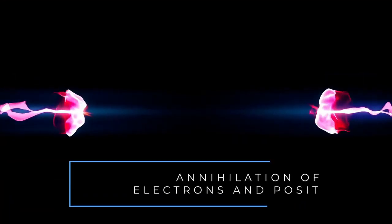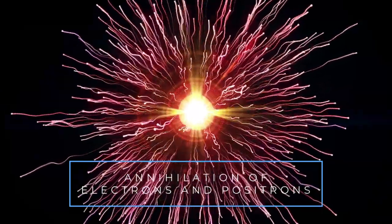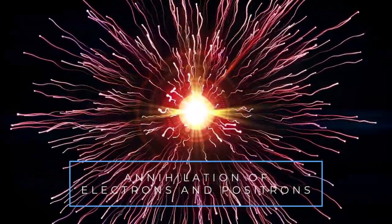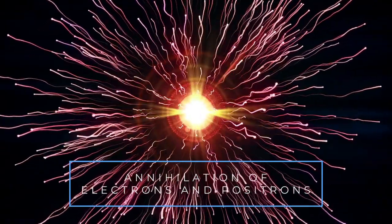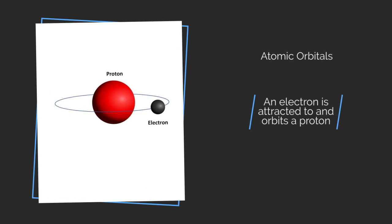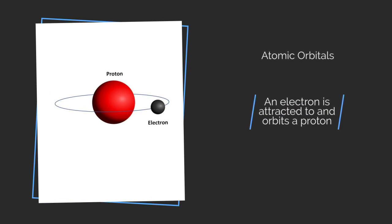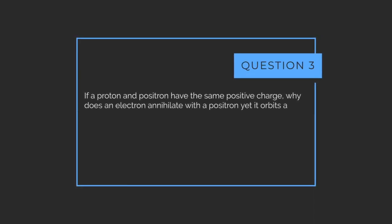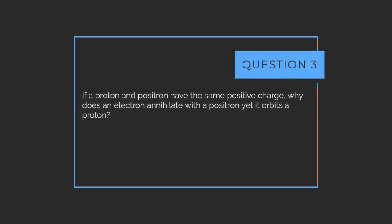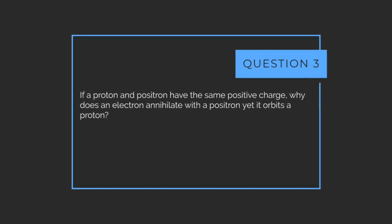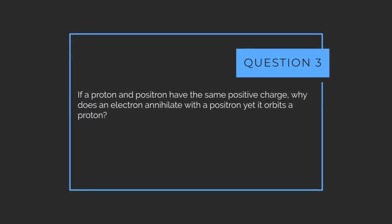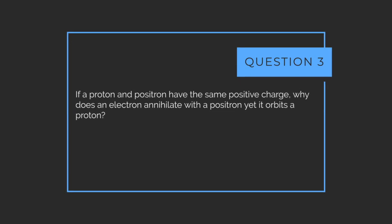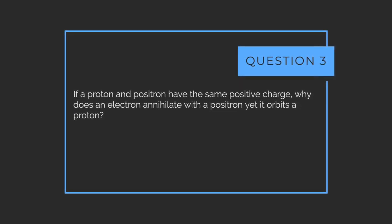And now for matter interaction. Electrons and positrons are attracted to each other and annihilate, completely disappearing in the process. Yet when an electron is attracted to a proton, it forms an orbital and becomes an atom. So here's the third and final question: If a proton and a positron have the same positive charge, why does an electron annihilate with a positron yet orbit a proton?